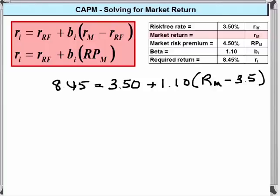Now in this case we need to simplify first so that the second component on the right hand side becomes 3.50 plus 1.10 times the return on the market minus 3.85.